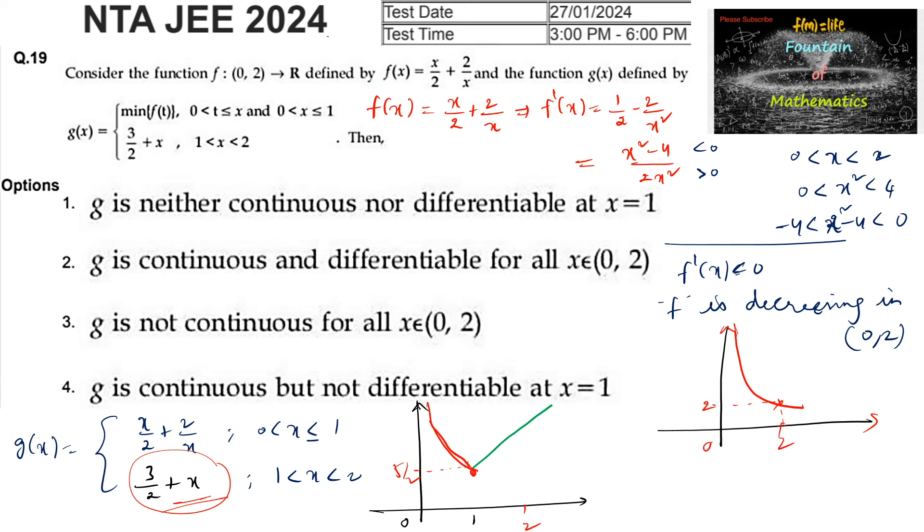There is a corner point at x = 1. The function g is continuous on (0, 2) but not differentiable at x = 1 because at a corner point we cannot define a unique tangent. Therefore, the answer is option 4: g is continuous but not differentiable at x = 1.